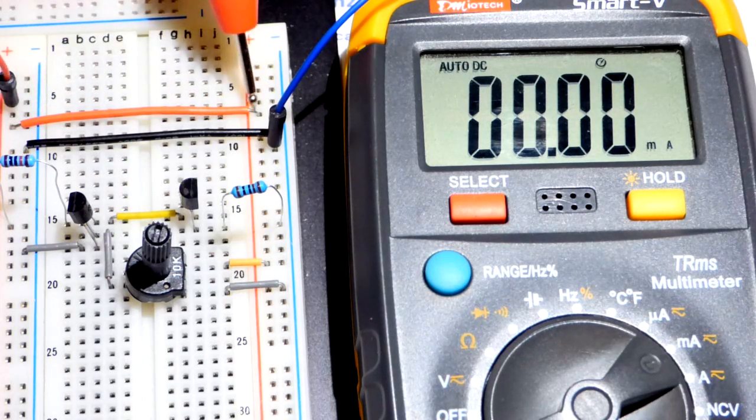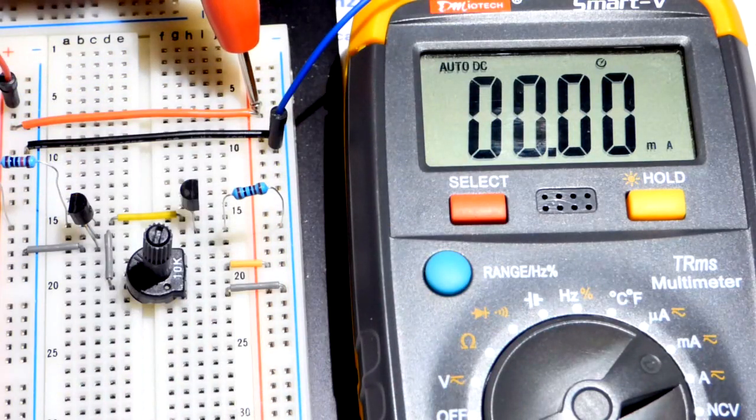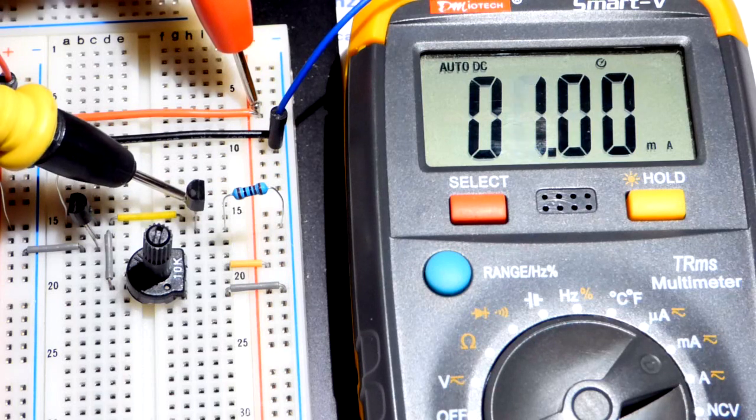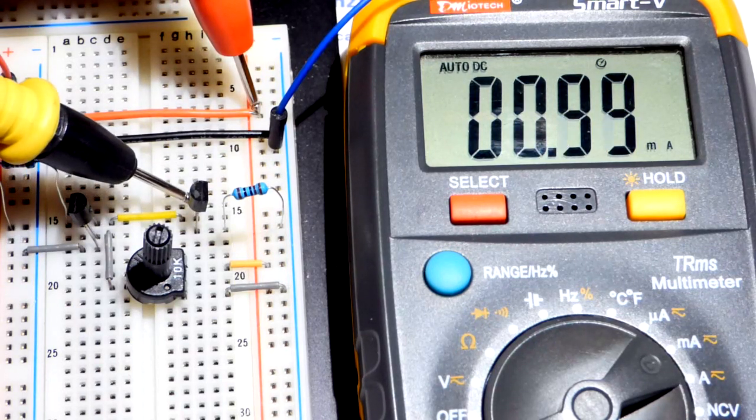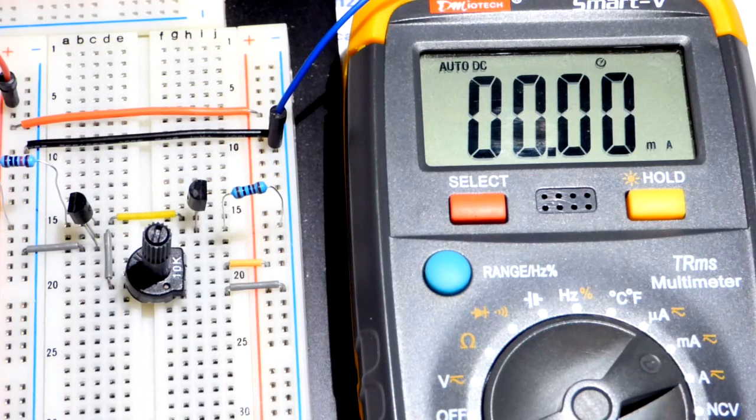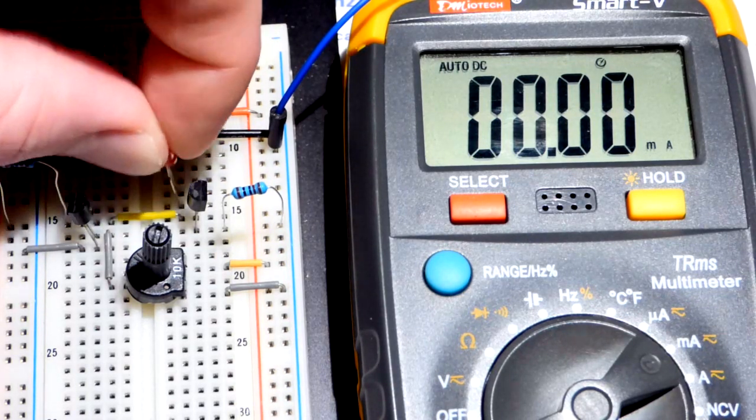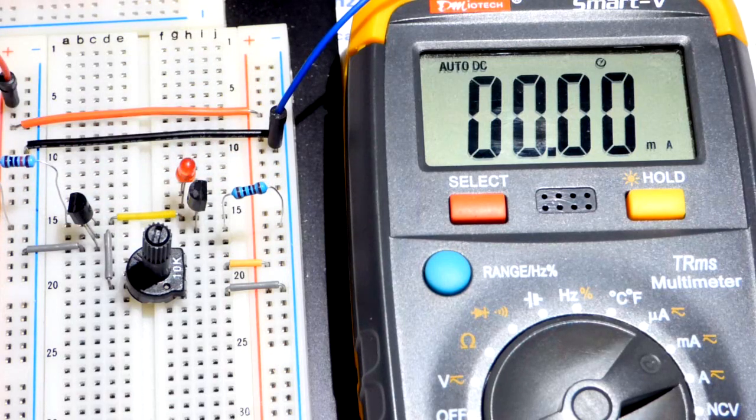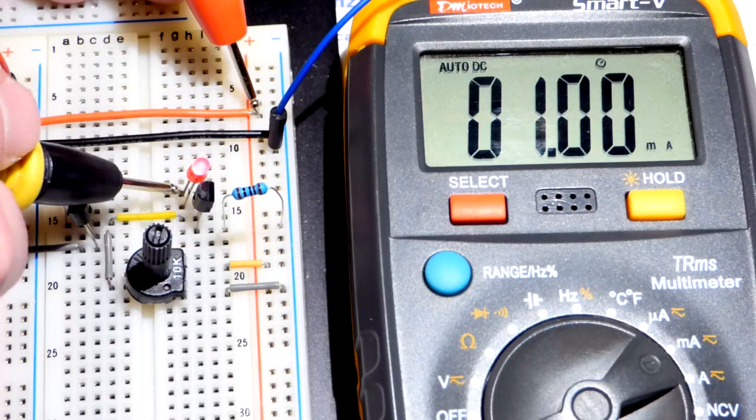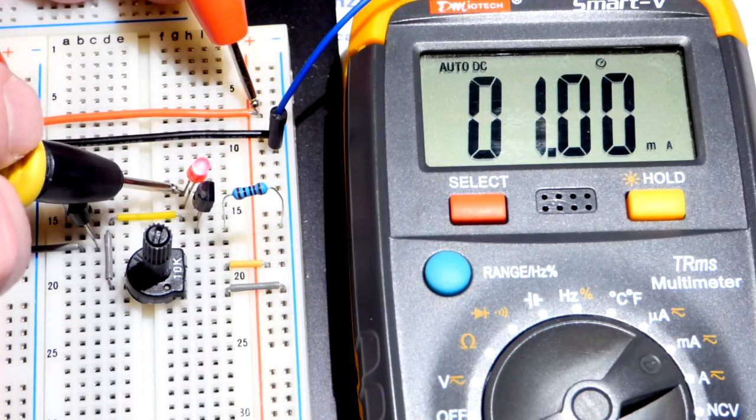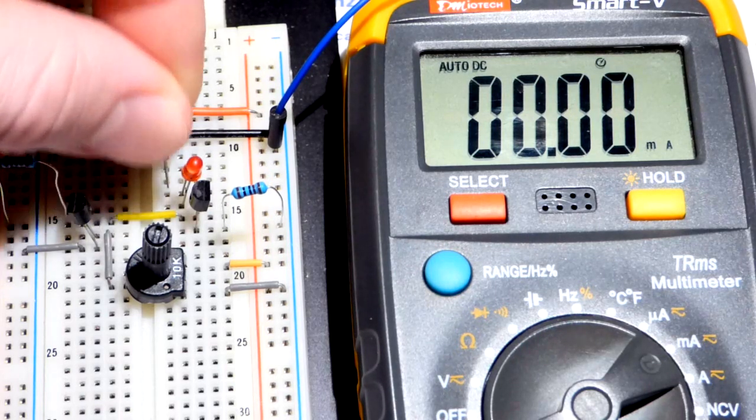Whatever voltage we put here, so one volt divided by 1000 ohms of resistance, we can expect one milliamp of current. Even with no load, I'll put the red probe up here. Current's going to flow through the meter from one probe to the other, and there you can see one milliamp of current.